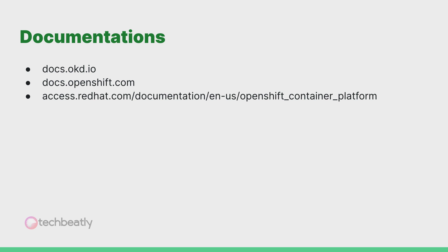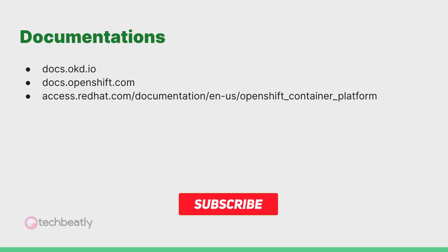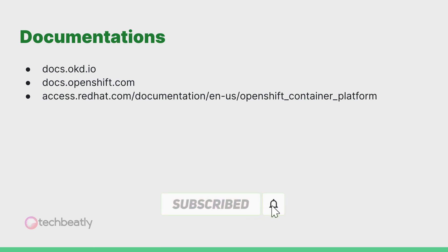There are different offerings from Red Hat for these. You will find the documentation for OpenShift in many places, such as docs.okd.io or docs.openshift.com. The documentation is structured to follow the different versions of OpenShift, and you will find older versions of documents as well.